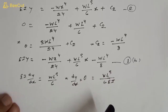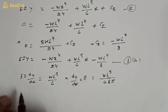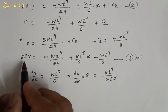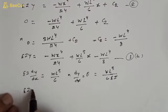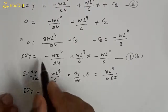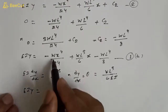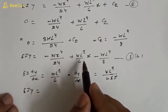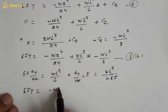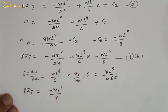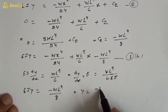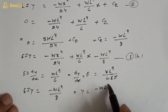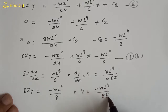Now for deflection at the free end, substituting x = 0 into equation 1b: the first two terms become zero, and we get EI·y = −wl⁴/8. Therefore y = −wl⁴/8EI. This is the equation for deflection at the free end.